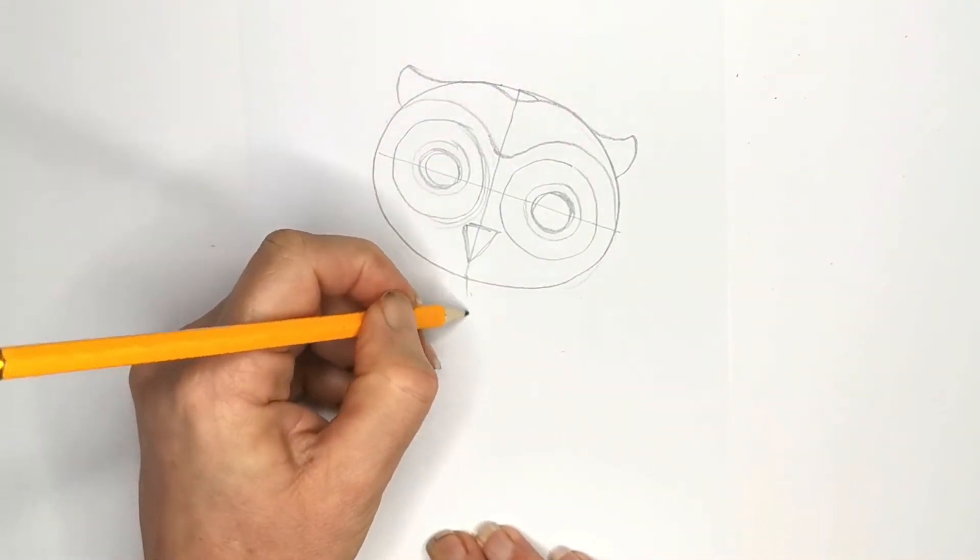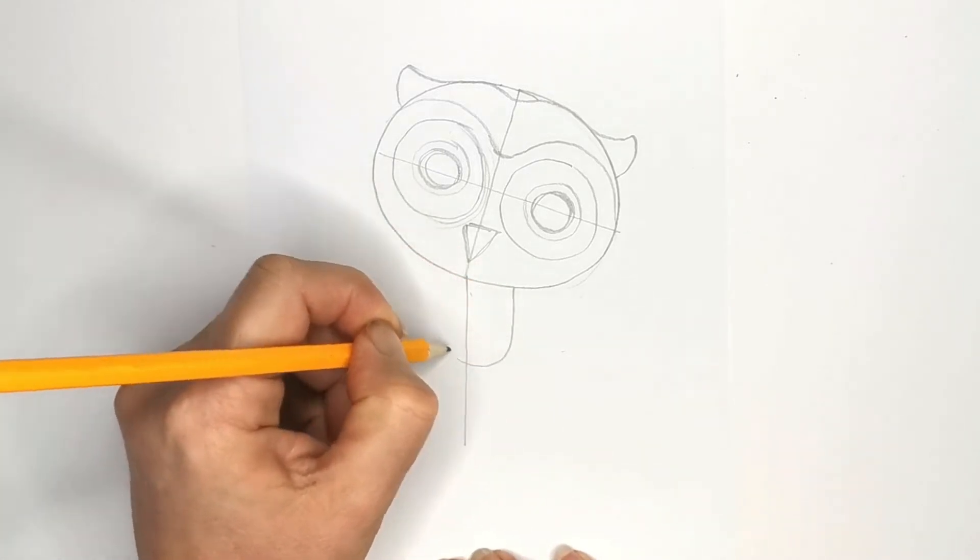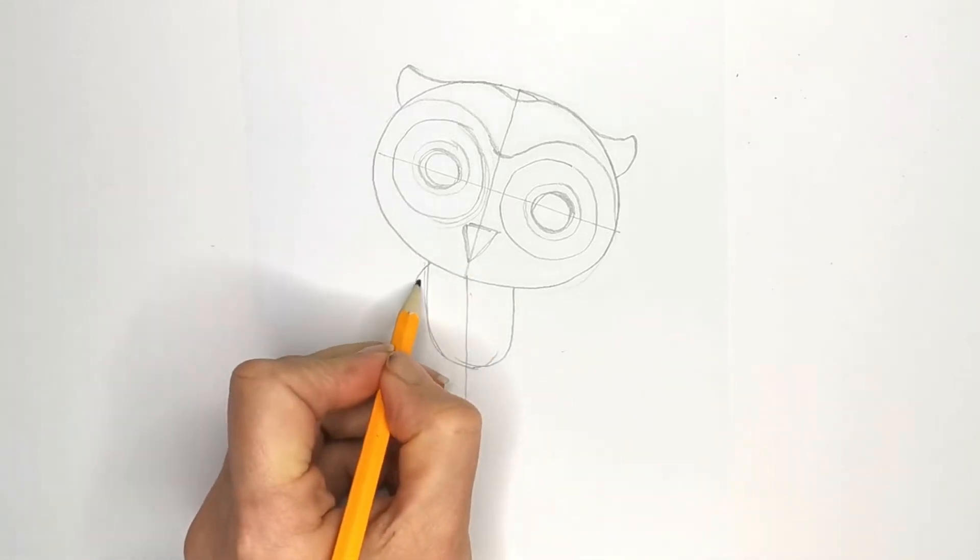And we're going to get the body in straight. So we'll draw ourselves a centerline. Nice little body on this guy. Not too big. Make him look really cute.